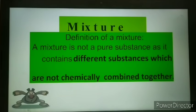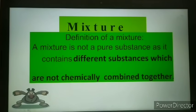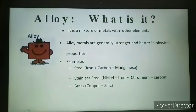Plants and animals too are made up of mixtures of very complicated substances. All things which we eat — raw or cooked — are mixtures of a large number of substances like carbohydrates, proteins, vitamins, salts, etc. Man has also made many mixtures that are more useful than pure substances — for example, alloys.